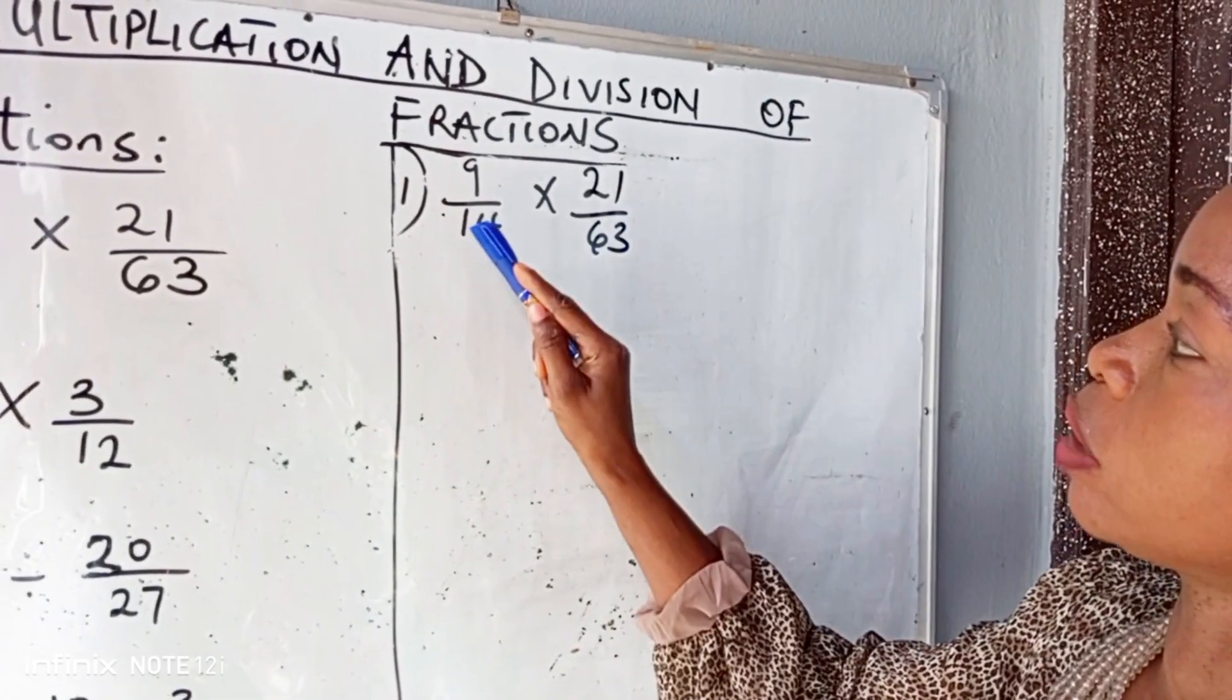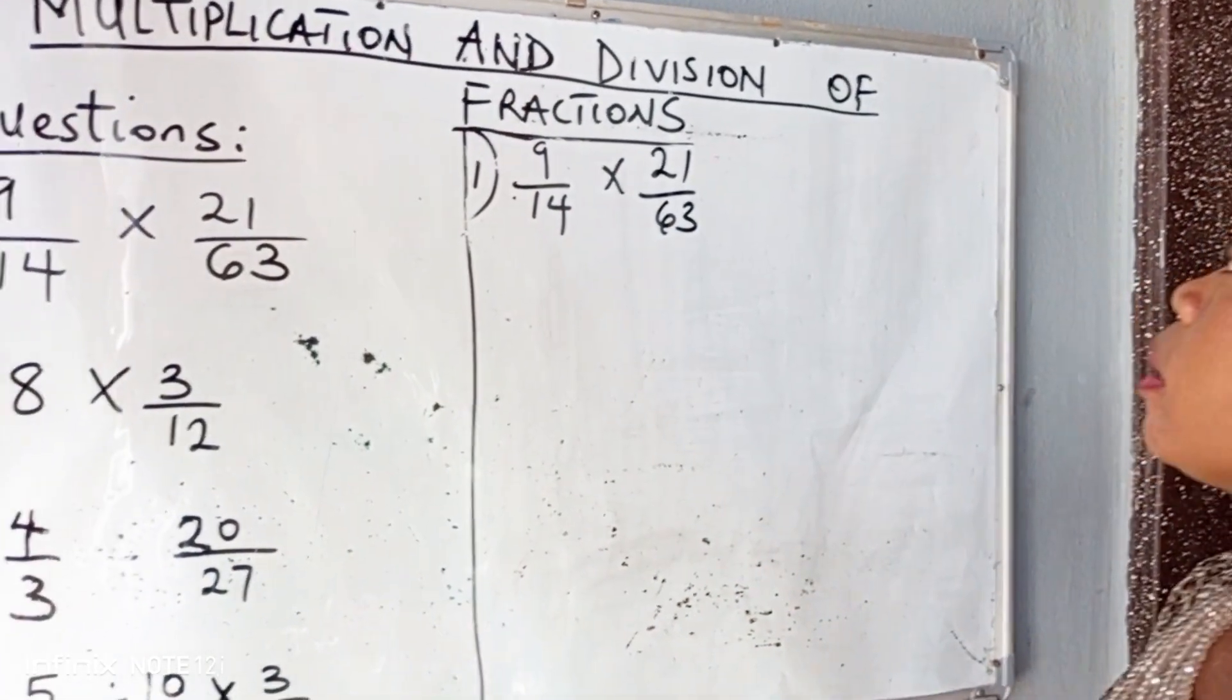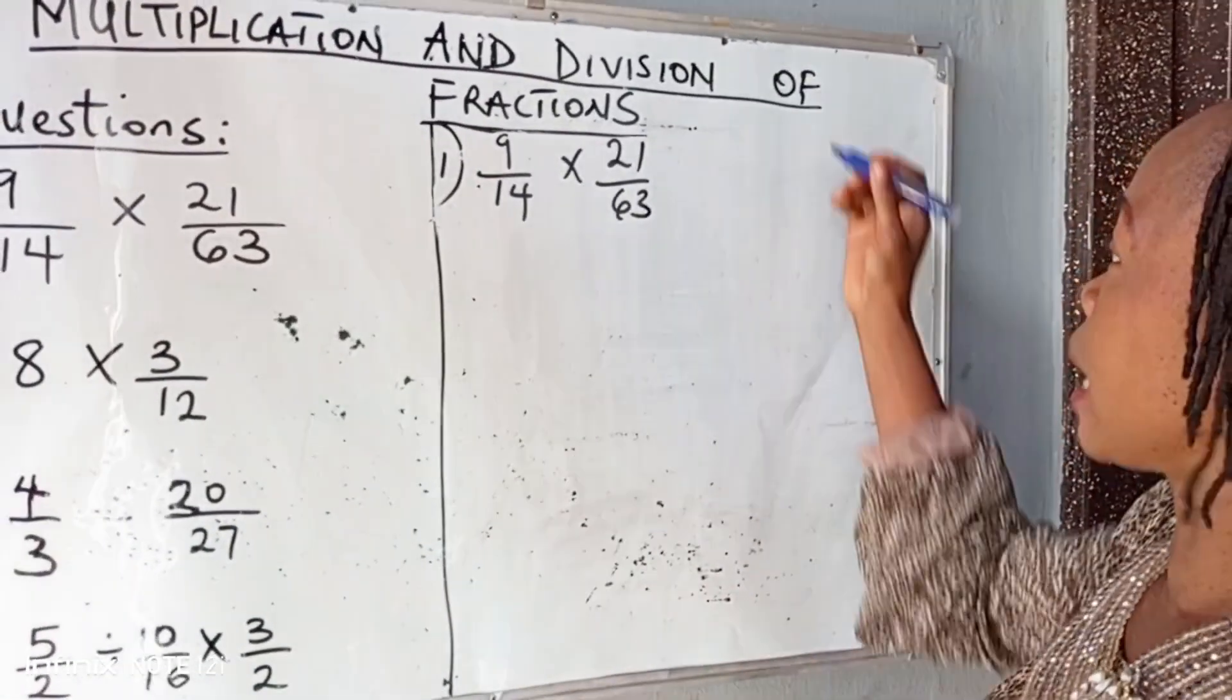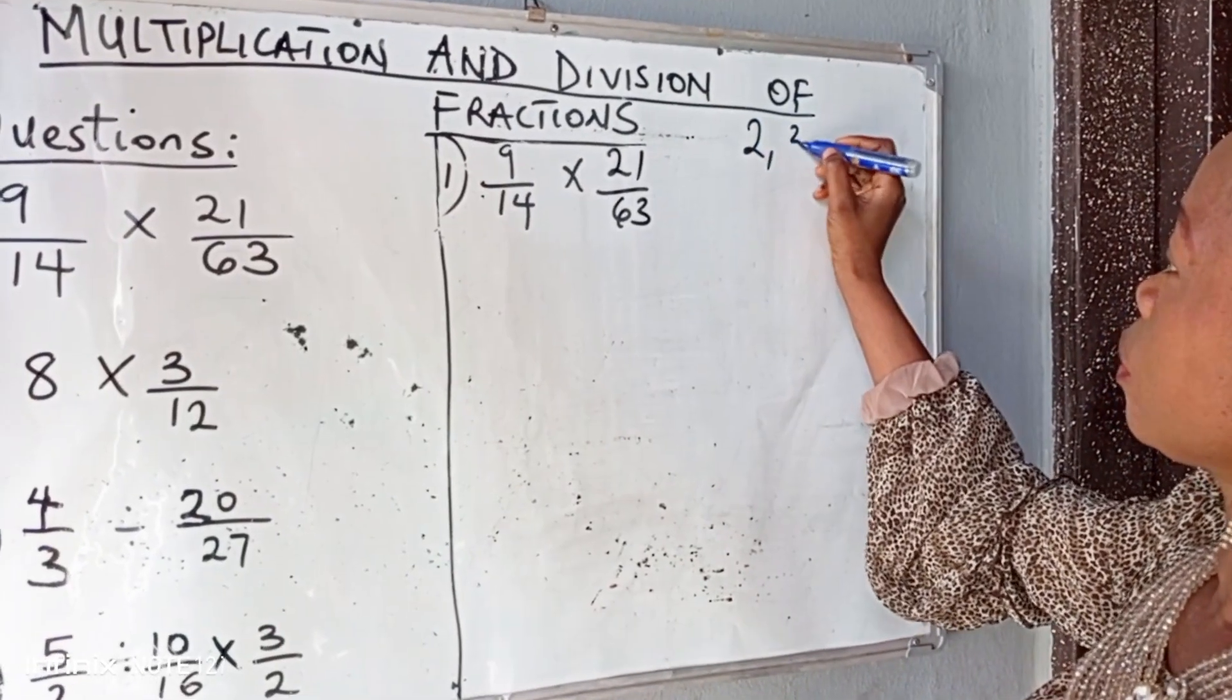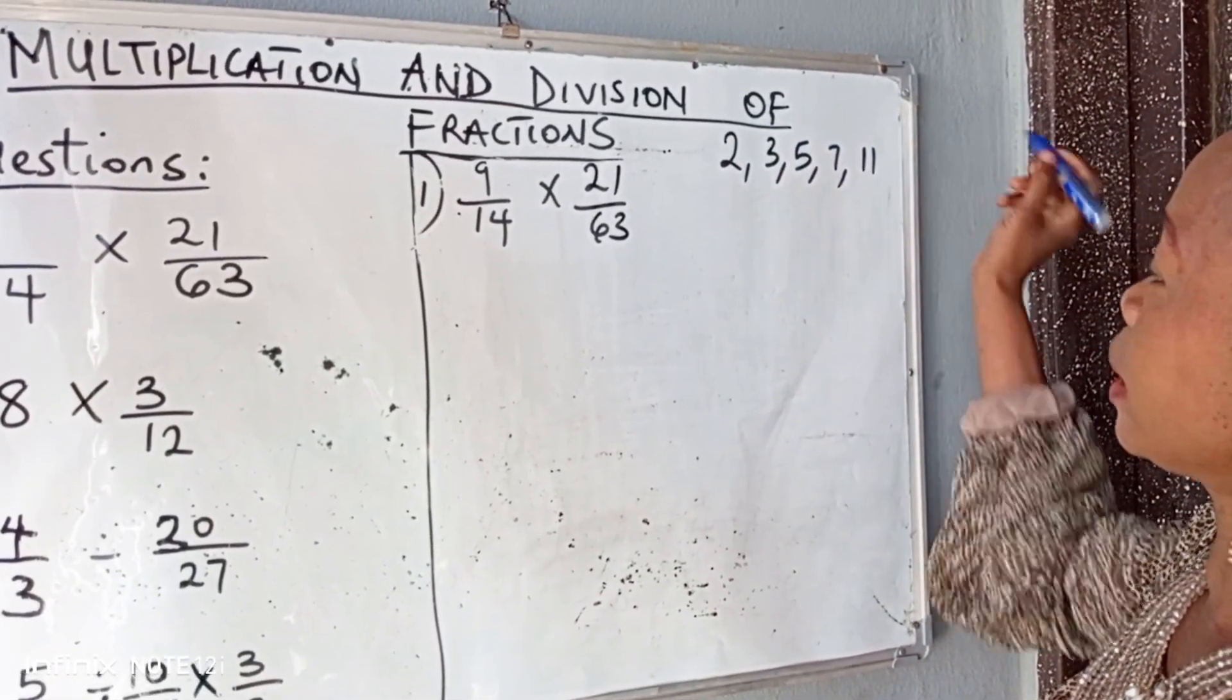Then we check 21 and 14. Is there any number that can divide them successfully? Again, let me quickly write out. We divide using prime numbers. And prime numbers are 2, 3, 5, 7, 11, 13, and so on.